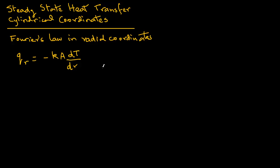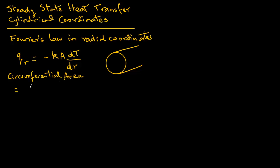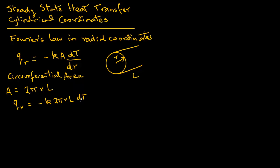To solve this equation we will first write what the area stands for. A pipe has a circular cross-section and is of a certain length. The circumferential area through which heat transfers is 2πr times l, that is the circumference of a circle times l. So the circumferential area is 2πrl for a pipe of radius r and length l. We substitute for area: Q_R equals minus k times 2πrl times dT over dr.